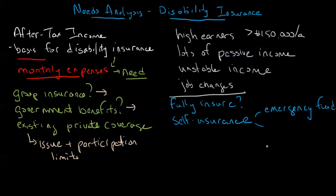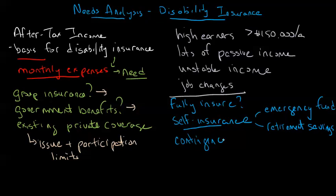Self-insurance might also cover other things, like dipping into retirement savings — which is clearly not ideal, but may be necessary in some cases. So we have to consider that some self-insurance is probably going to be necessary, whether it's covering the first few weeks or months of a disability, insuring to let's say 80% of your expenses, or having a contingency plan that says if something goes wrong, we're going to reduce certain expenses — and we'll plan out what those will be in advance. There are lots of different options here.